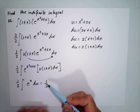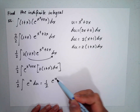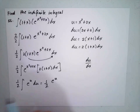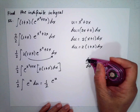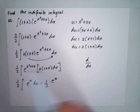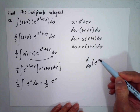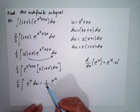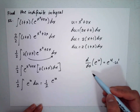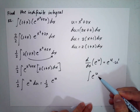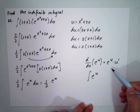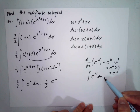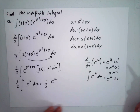So this becomes one half the integral of e to the u. Recall that the derivative of e to the u is e to the u multiplied by u prime. Therefore, the integral of e to the u du — when u prime equals 1 — is simply e to the u plus C.